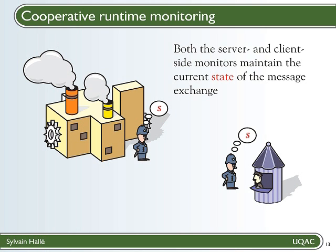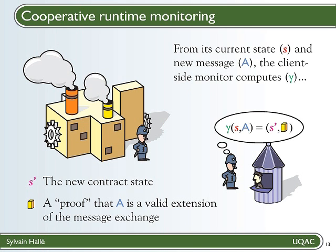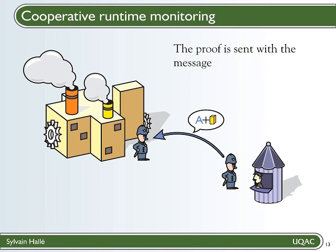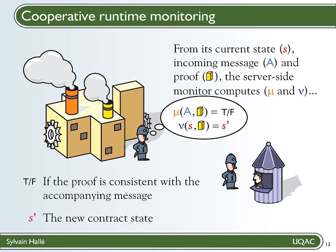Suppose that the client wants to send a message to the server. From its current state S, and given the message A it wants to send, the client-side process uses a function gamma to compute two things. S' is the new contract state, the result of applying the transition function to S with message A. And the yellow brick in the picture represents a proof that A is a valid extension of the message exchange from the current state. The message is then sent to the server along with the proof. When the server receives it, it will do two things. First, the function mu takes the client's message and its proof and simply checks that the proof is consistent with the message — that is, that the client did not try to smuggle a proof for a different message, or that the message has not been altered after the proof for it has been computed.